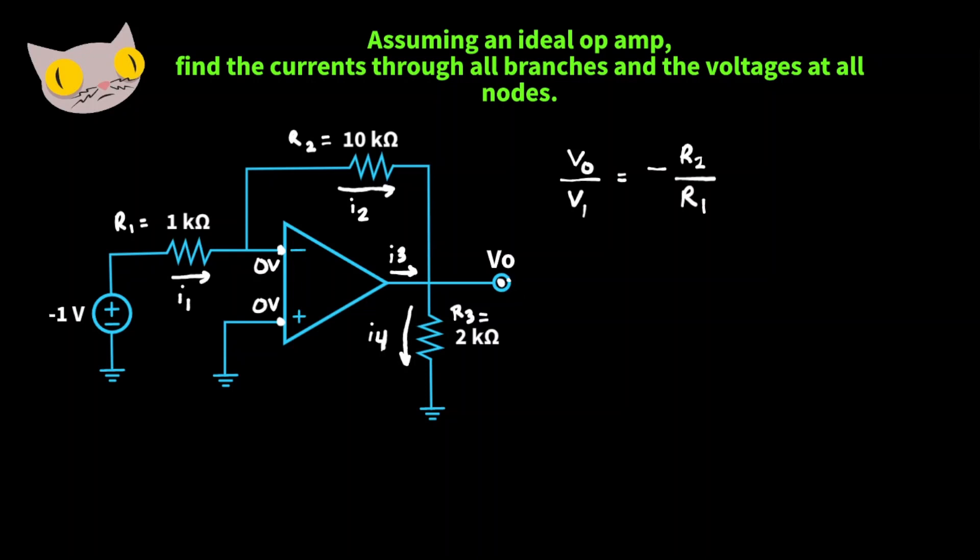So in order to find the output voltage, let's first look at the gain equation for the op amp. We have Vout over Vin is equal to negative R2 over R1. Rearranging that equation and filling in our values, we get output voltage is equal to negative 10k ohms over 1k ohms times the input voltage which is negative 1 volt. Solving that we get output voltage is equal to minus 10 times minus 1, giving us an output voltage of 10 volts.